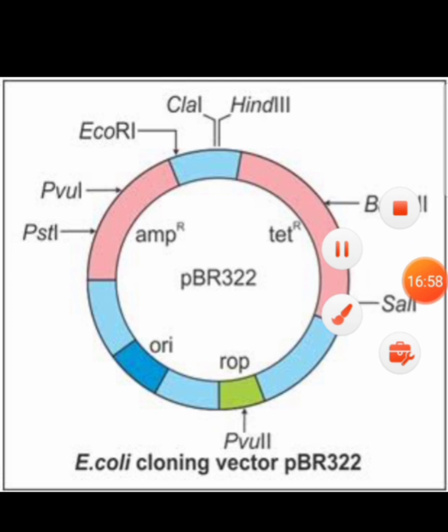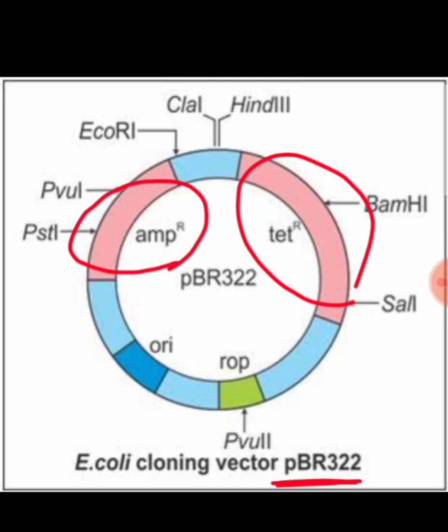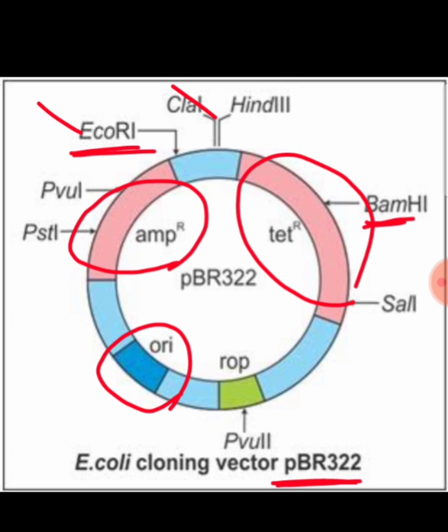Here you can find the structure of the plasmid vector pBR322. It has antibiotic resistance genes like the ampicillin resistance gene and the tetracycline resistance gene, in addition to the origin of replication and different restriction sites — especially EcoR1, BamH1, PVU1, and PST1 — which are helpful for introducing foreign genes into the antibiotic resistance gene.